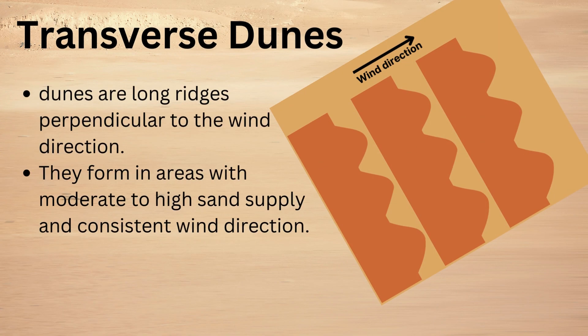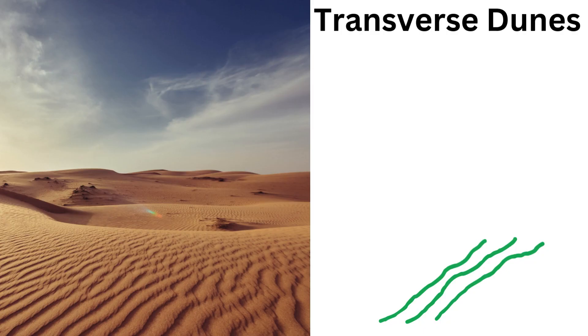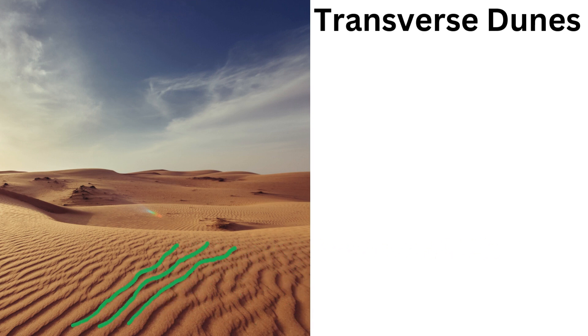The next one is transverse dunes. This kind of dunes are long ridges perpendicular to the wind direction. Here you can see the formation is perpendicular to the wind direction. They form in areas with moderate to high sand supply and consistent wind direction. You can find them in places like the Arabian desert.